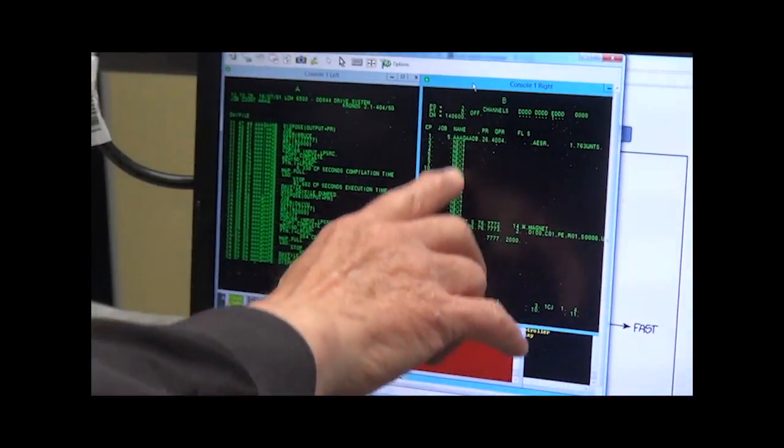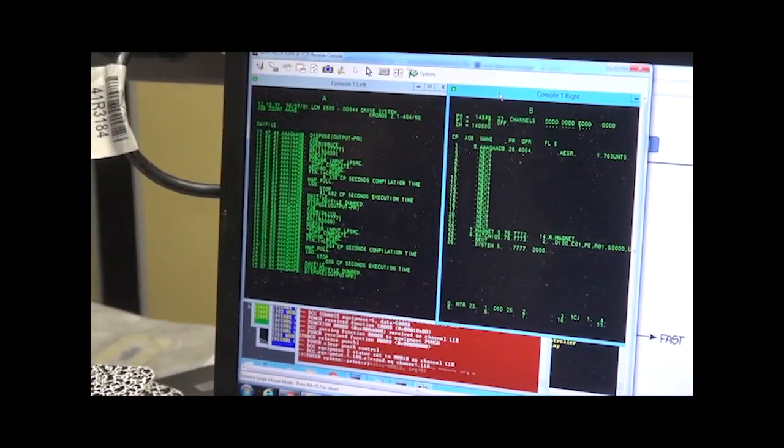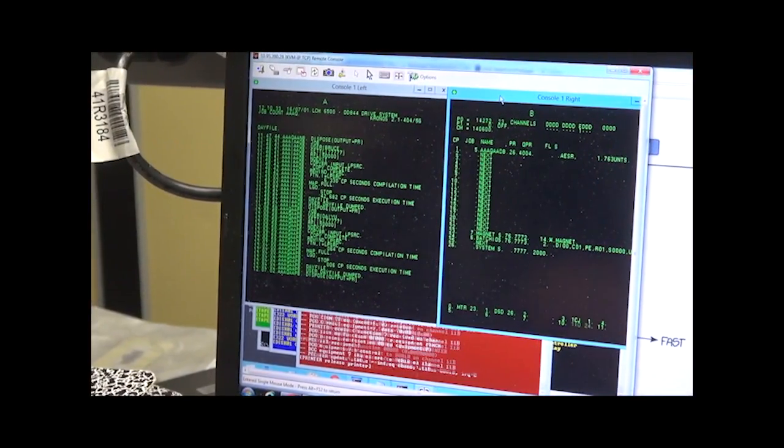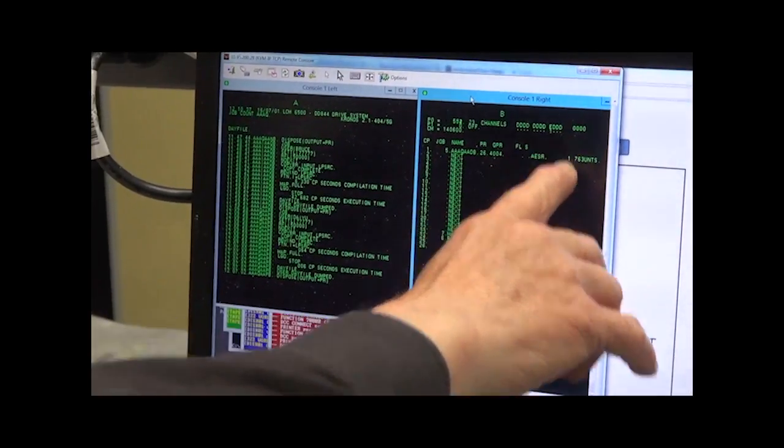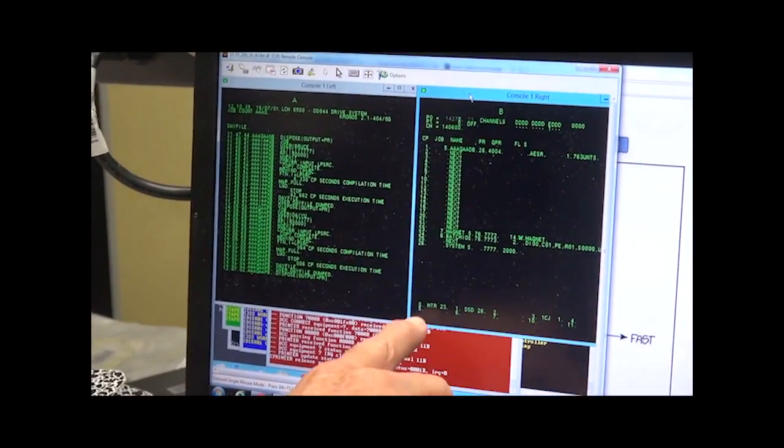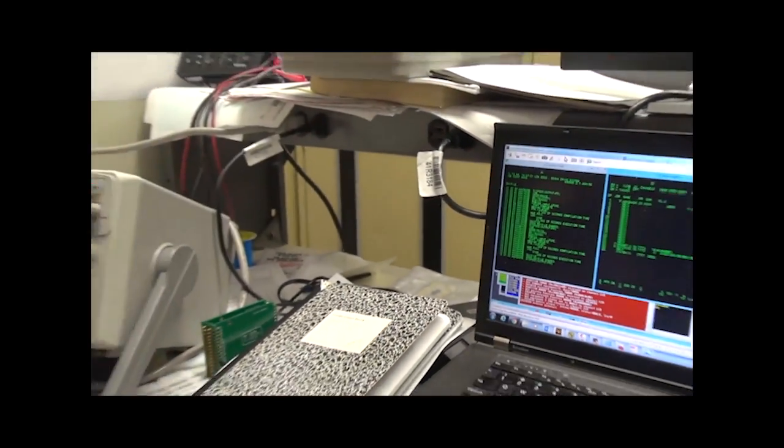And these are the two console replacement windows. These are all the separate control points, they call them. But they're separate processes that can be run. And up here, we've got the display of what the channels are doing. And down here, what each of the peripheral processes are doing. Right now, there isn't much going on.